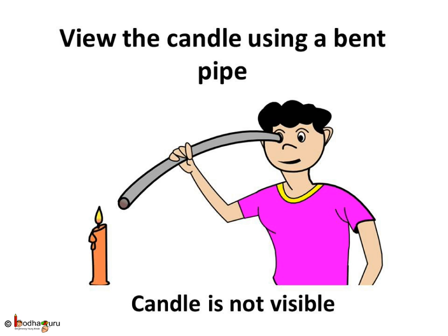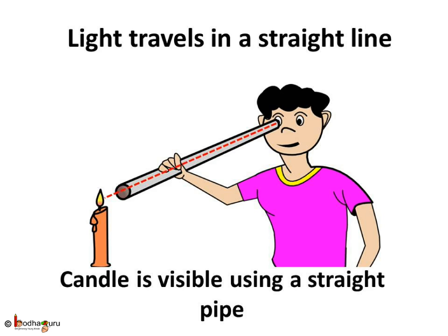Light in any medium travels along a straight line from the source to any point. Just think what would happen if light didn't travel in a straight line — the object you see would not actually be where you think it is, and it would become difficult to locate the object. But we don't face any such problem because the light travels in a straight line.